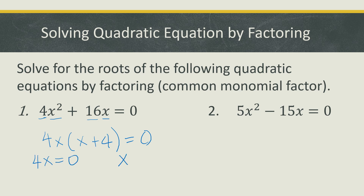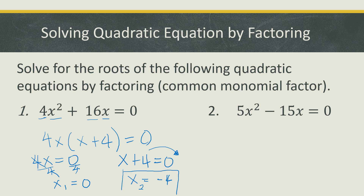To get the first solution from 4x = 0, divide both sides by 4, giving x = 0. For the second factor, x + 4 = 0, transpose positive 4 and that becomes negative 4. So our two solutions are x = 0 and x = -4.